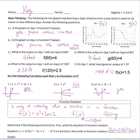This first part says: the following are two graphs representing a dog's distance from a pole while it waits for its owner on two different days. Answer the following questions. You can see the first one — it walks a little bit away from the pole. It started away from the pole. It looks like it probably walked to its farthest point, and the highest point is at five feet. So the leash is probably five feet, and then it kind of meandered its way back.